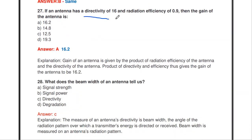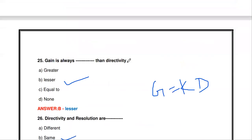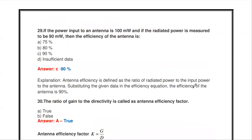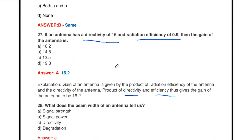If an antenna has a directivity of 16 and radiation efficiency of 0.9, what is the gain? Using G = η × D = 0.9 × 16 = 14.4. The gain of the antenna is 14.4.